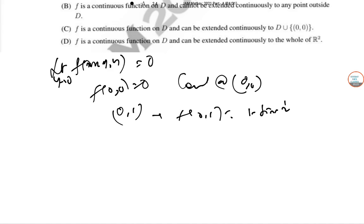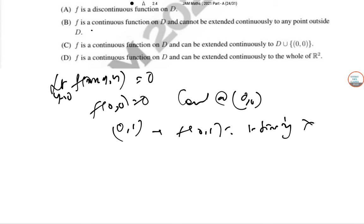F of zero one is one sine of one by Y and this does not exist. So, this option is not true. Continuous, continuous, continuous. This is wrong. Function on D cannot be extended continuously to be any point outside D. F is a continuous function of D and can be extended to this. F is continuous and D can extend continuously to the whole of R square. So, this is the right answer.